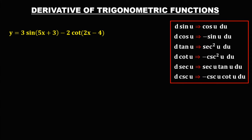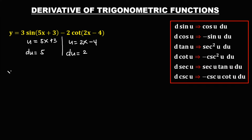For this given, find the derivative for every term. For the first term, u is 5x plus 3 and du is 5. For the second term, u is 2x minus 4 and du is 2. To find the derivative of the first term: bring down the constant, then times the derivative of sine, which is cosine. So we have cosine(5x plus 3) times du, which is 5.